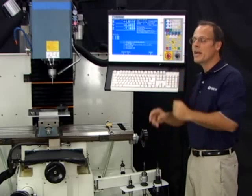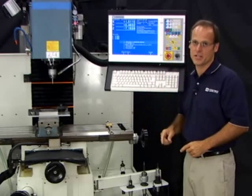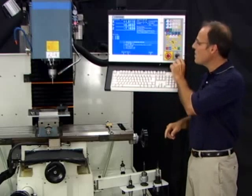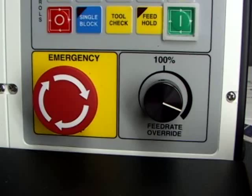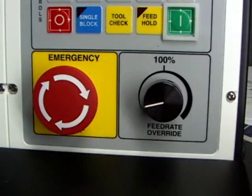So the second time I hit Cycle Start, it's going to go to that tool change position. Now before I do that, remember I want you to turn down the feed rate override knob so I'm in total control of the machine.